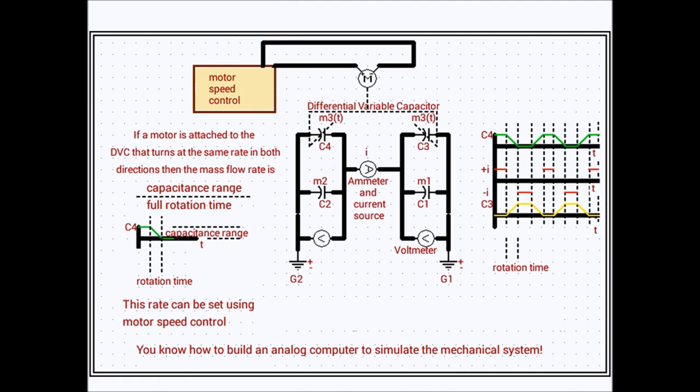And we can use this motor speed control to set this rate at a desired value. So the complete circuit is shown here with an ammeter and current source combination represented by the symbol between the M1 and M2 capacitor blocks. Each block has its own independent voltmeter to measure the analog of velocity.